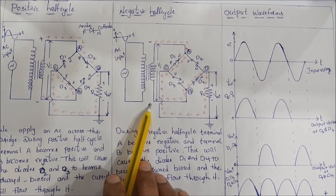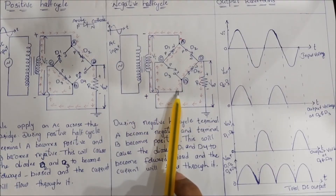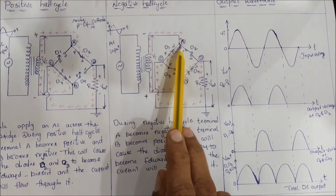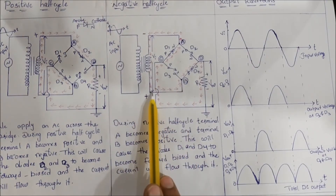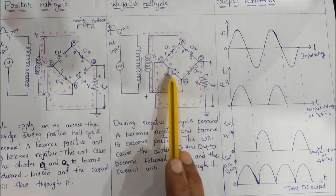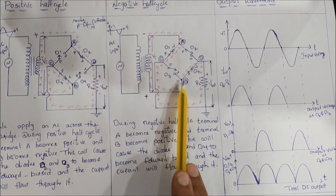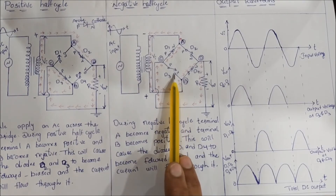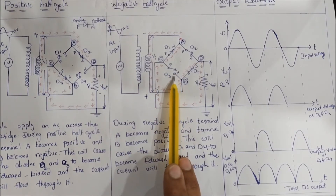Now we will look at the negative half cycle. During the negative half cycle, terminal B is positive and terminal A is negative. We have two paths for current flow in the bridge circuit. We will check diode D3 - D3's cathode terminal is connected to the negative terminal, so D3 is reverse biased.